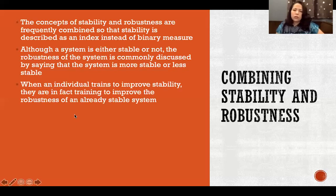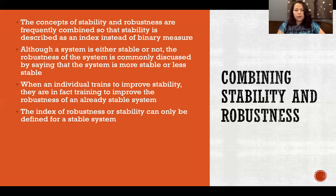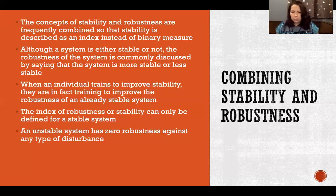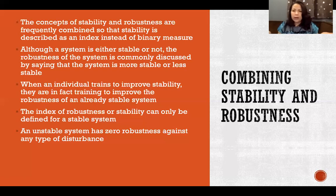When an individual trains to improve stability, they're in fact training to improve the robustness of an already stable system. Importantly, the index of robustness can only be defined for a stable system. If a system is not stable, robustness is zero — that system cannot withstand any amount of disturbance without losing its equilibrium.